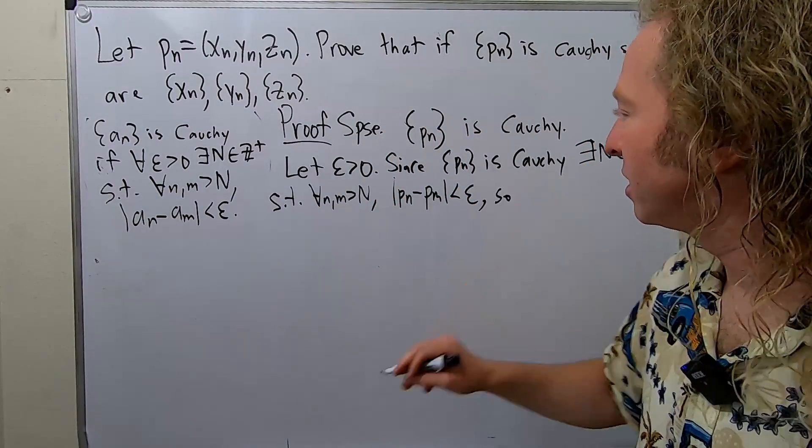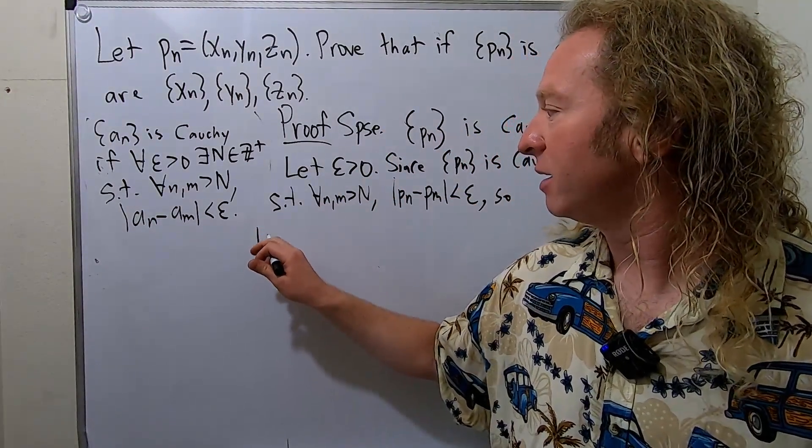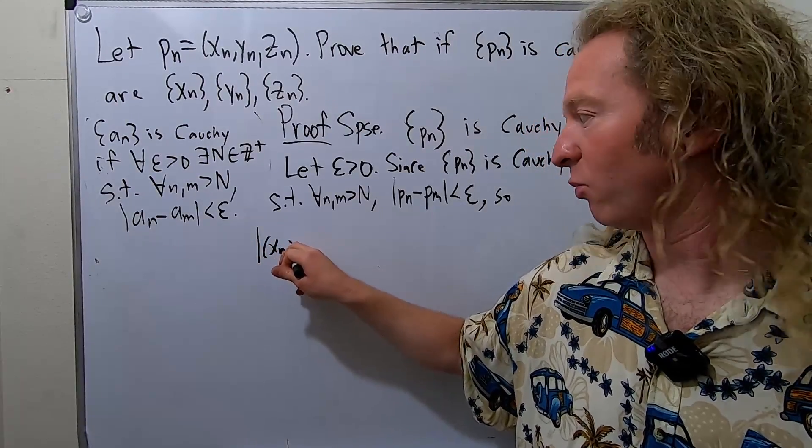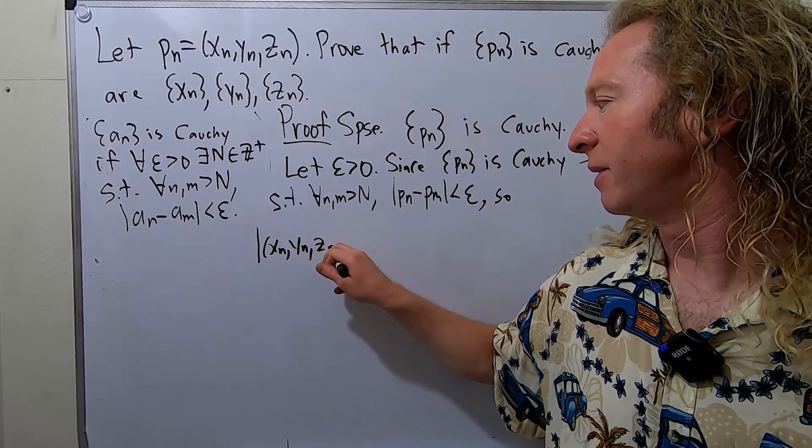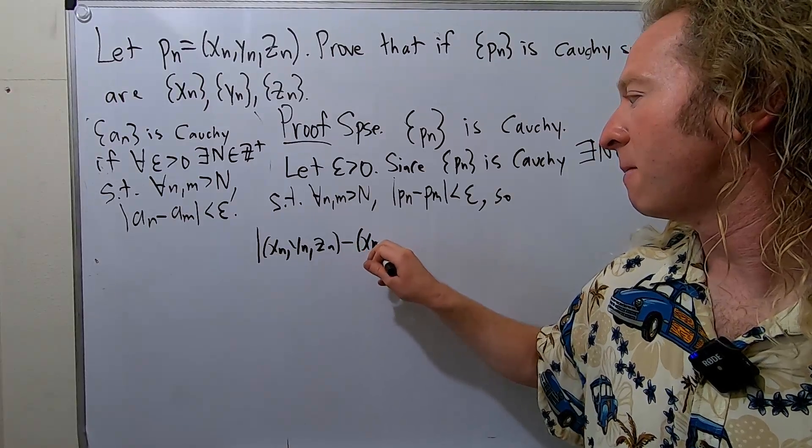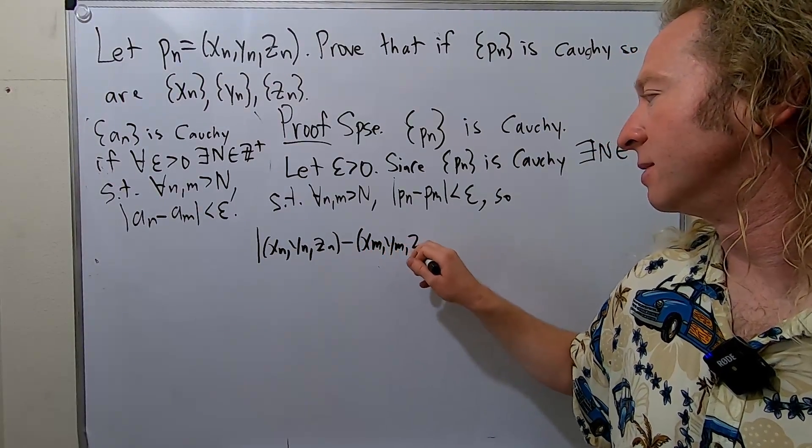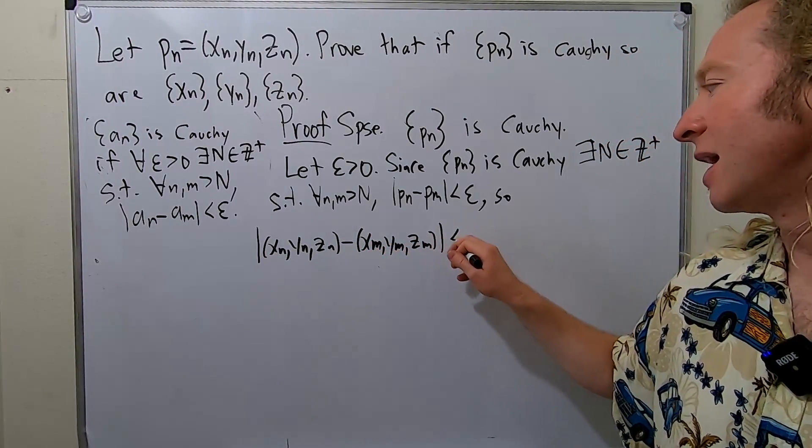So this means that, well, P sub n is this triple here. X sub n, Y sub n, Z sub n minus, and then X sub m, Y sub m, Z sub m. And this is less than epsilon.